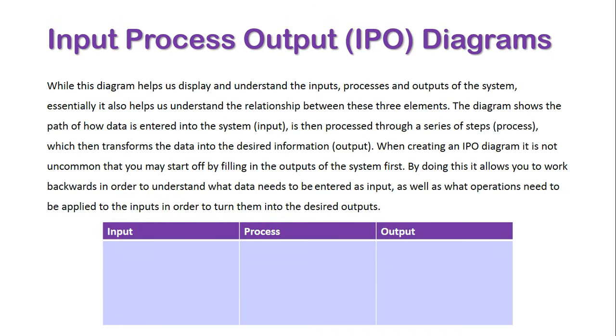When creating an IPO diagram, it's not uncommon to start by filling in the outputs first, essentially stating what you want out of the system. By doing so, it allows you to work backwards to understand what data needs to be entered as input, as well as what operations need to be applied to turn it into that desired output.